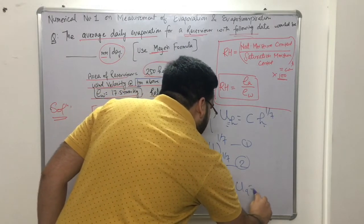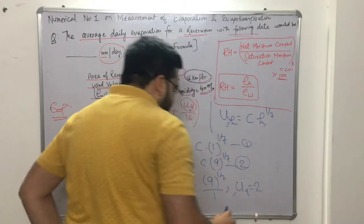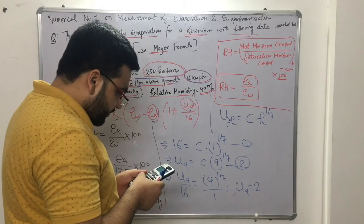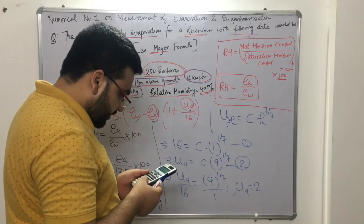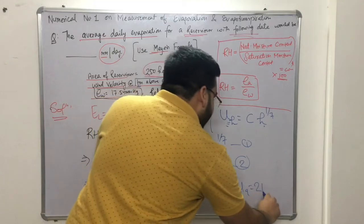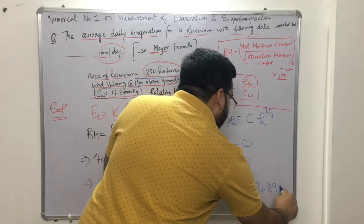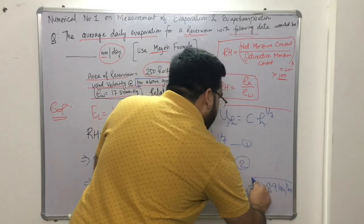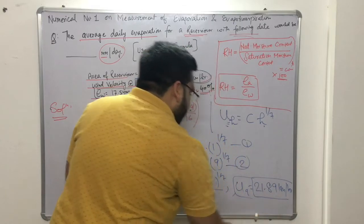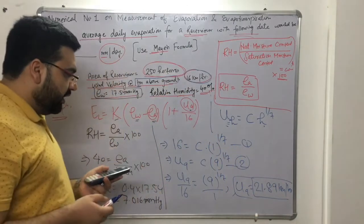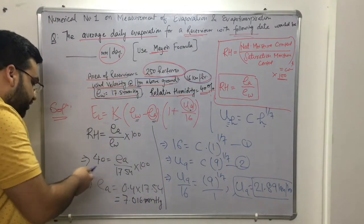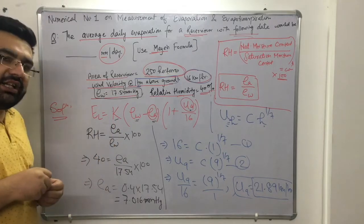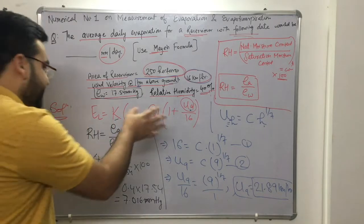So u9 comes out to be 21.89 kilometers per hour. Now we know everything: u9 = 21.89 km/hr, ea = 7.016 mm Hg, ew = 17.54 mm Hg, and K = 0.36. We can now substitute all values into Meyer's formula.